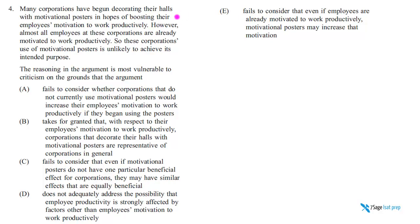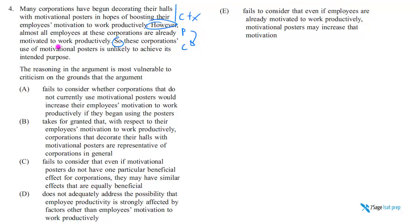However — and this word 'however' renders everything before it context, as we learned in our grammar lessons — the author is saying: now pay attention, here's my argument. However, almost all employees at these corporations are already motivated to work productively. The word 'so' renders this the premise, and what follows is the conclusion: so these corporations using motivational posters are unlikely to achieve their intended purpose — which, from the referential phrase earlier, means boosting employees' motivation to work productively.